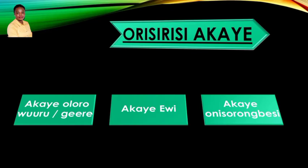Comprehension comes in the prose form, in the poetry form, and in the drama form. These three types of comprehension are very important in the Yoruba language.